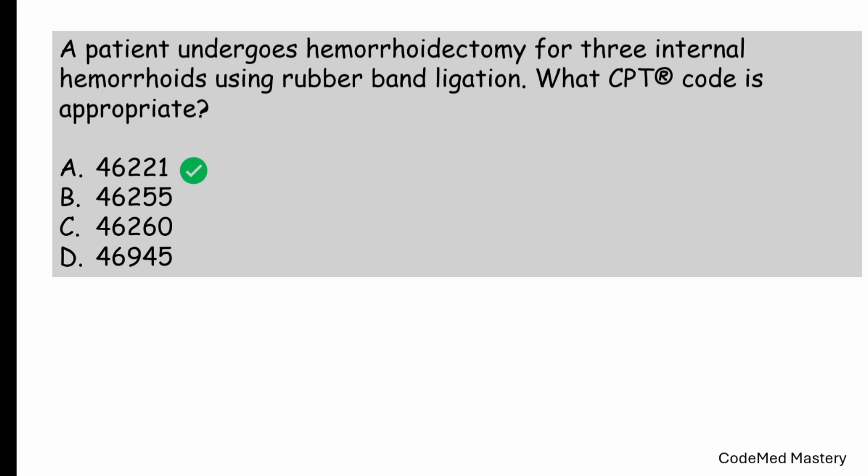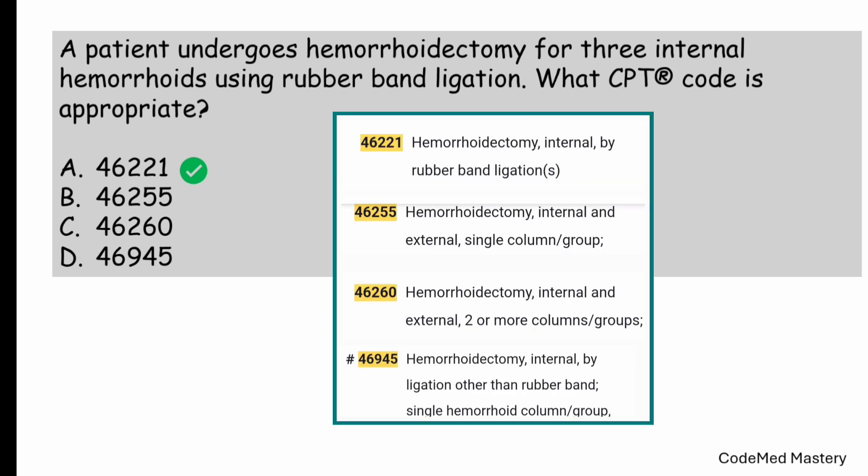If you chose option A, 46221, then you are absolutely right. Let us see how option A is correct. Read the question: a patient undergoes hemorrhoidectomy for three internal hemorrhoids using rubber band ligation — what CPT code is appropriate? Let us check the code 46221. It is for hemorrhoidectomy, internal, by rubber band ligation. In the question they have also given rubber band ligation, hemorrhoidectomy for internal hemorrhoids. Therefore the right answer is option A.